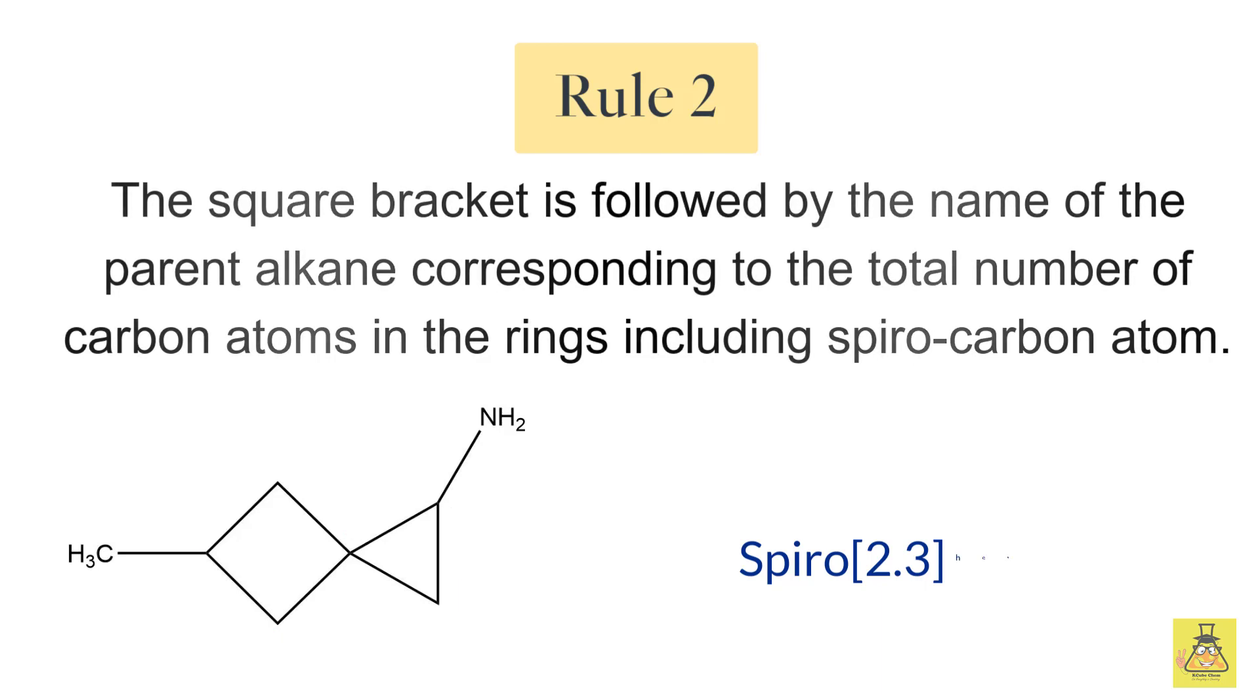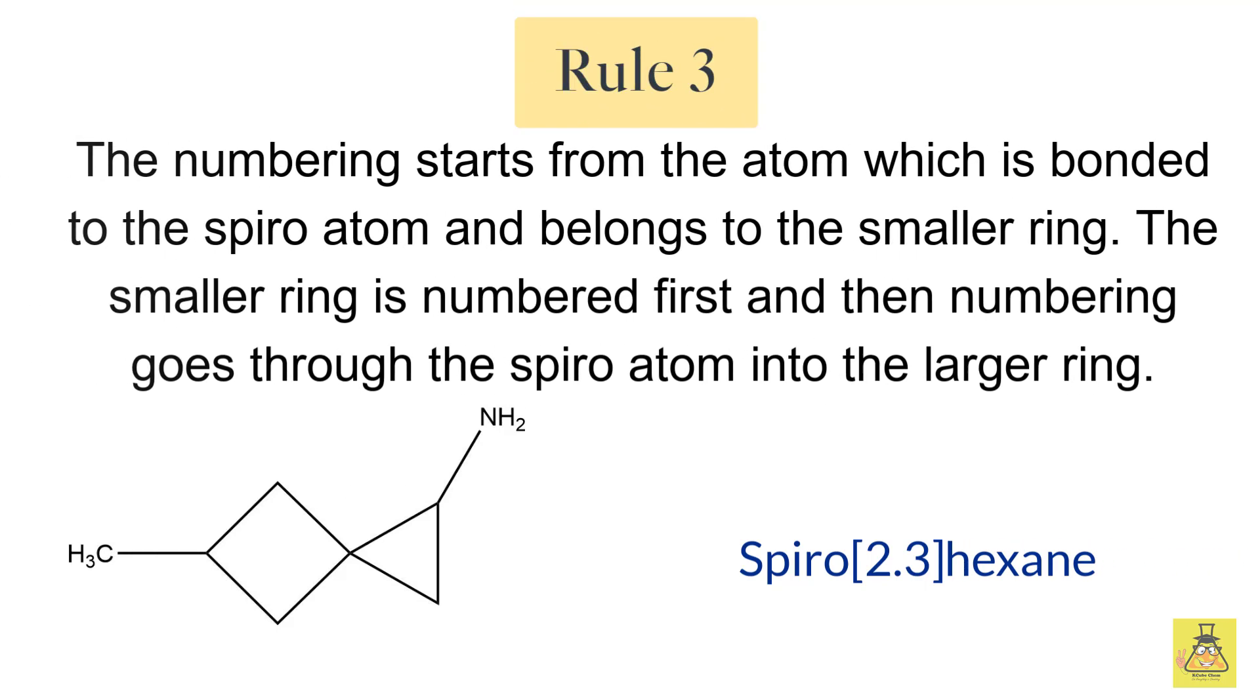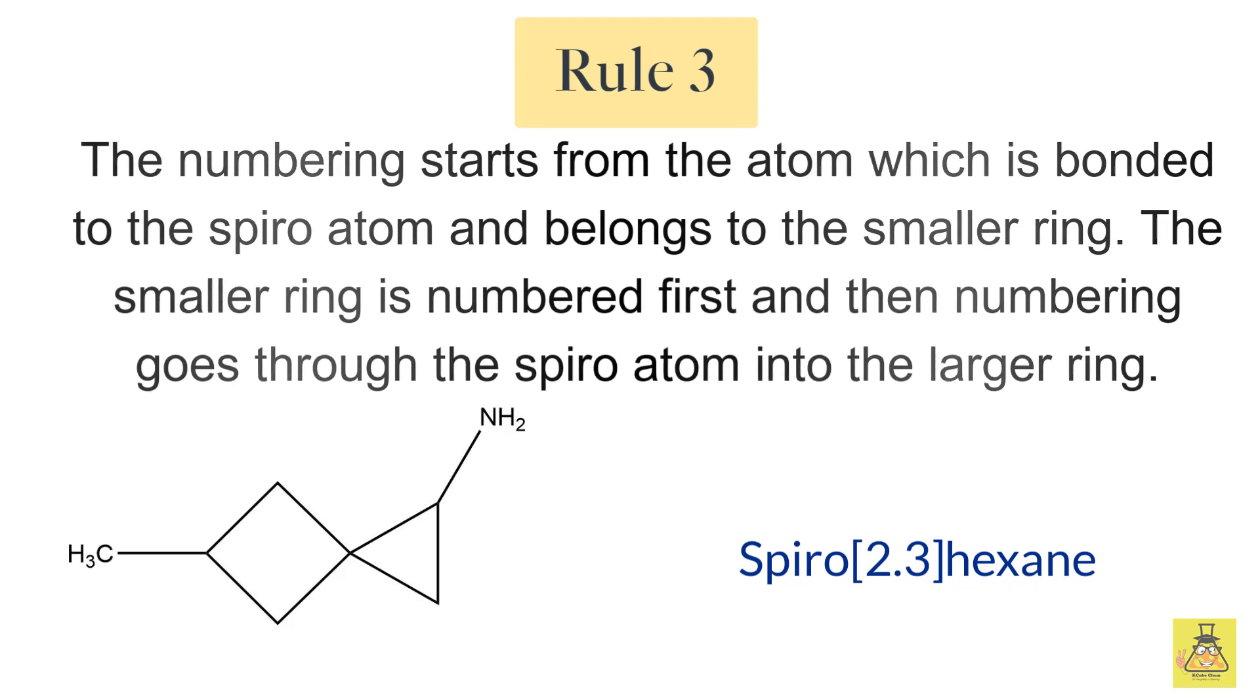Let's get to rule number three. The numbering starts from the atom which is bonded to the spiro atom and belongs to the smaller ring. The smaller ring is numbered first and then numbering goes through the spiro atom into the larger ring. In our case, since we have a smaller three-member ring, this is where we will start numbering from, and this carbon here will get number one as it has an amine functional group attached. Then we go to the spiro atom and then to the larger ring.